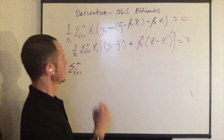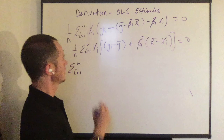Finally, isolating beta one hat, we get that beta one hat equals the sum from i equals one to n of x_i minus x bar times y_i minus y bar, all over the sum from i equals one to n of x_i minus x bar squared. Call this equation ten. Beta one hat — the estimate of the population parameter using sample data — is just the covariance between x and y divided by the variance of x. This only works if the variance is positive; otherwise you'd be dividing by zero. If the sum of x_i minus x bar squared equals zero, that means all the x values are the same, so there's no variation in x to identify a regression line.